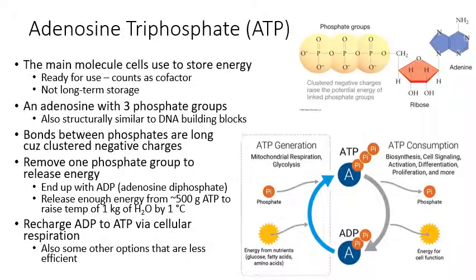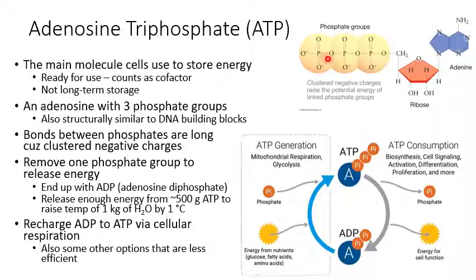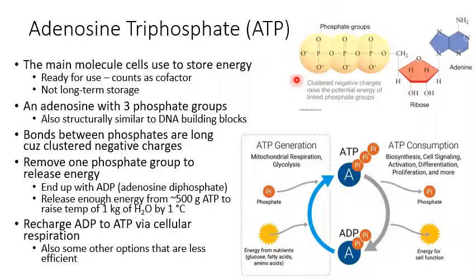It's actually those three phosphate groups that give ATP so much energy. On these phosphates, you end up with negatively charged oxygens right next to each other because the phosphates are all linked together. These negative charges don't like to be next to each other, so they push on each other, straining the bonds between phosphate groups and making those bonds very long. Long bonds have more energy associated with them. So if you break one of those bonds, you release all of that energy, and you get ADP — adenosine with two phosphates instead of three.